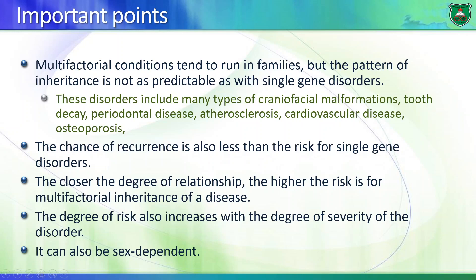The closer the relationship, the higher the risk. If you have a sibling affected by a condition, there is a good chance the sibling of that affected individual would be affected as well. A first cousin would have a higher chance of developing the condition relative to a second cousin, and so on.